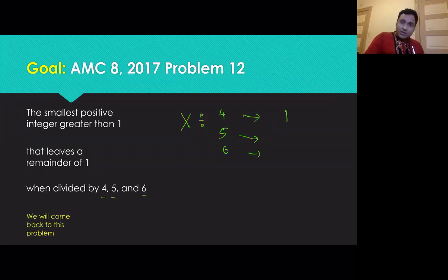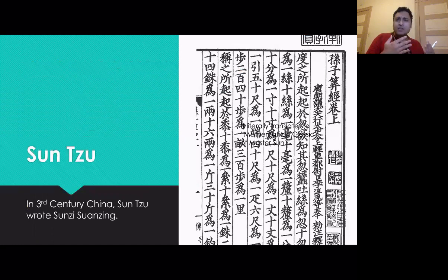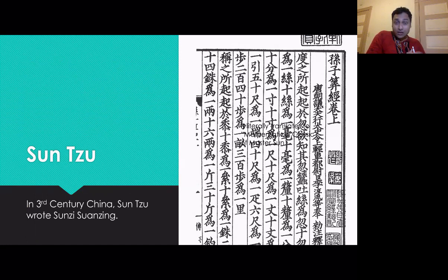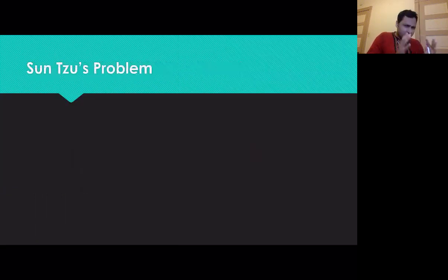This problem was created using an idea from the Chinese remainder theorem, which was discovered by one of the greatest ancient Chinese mathematicians, Sun Tzu. He is more famous for his book The Art of War. Sun Tzu's original problem was something similar to this AMC problem.